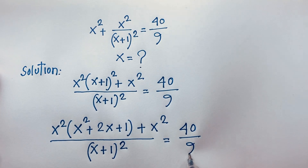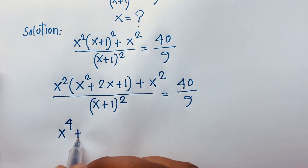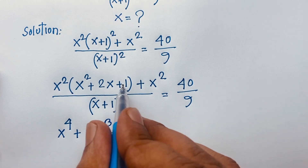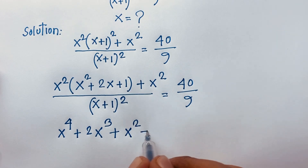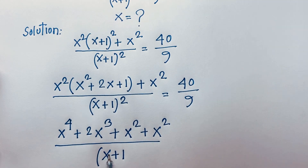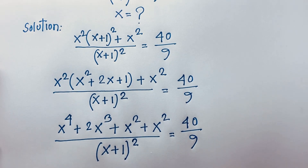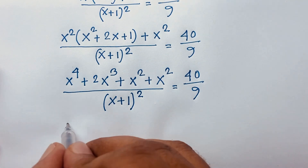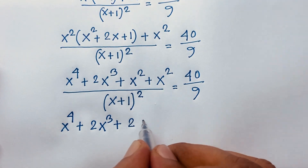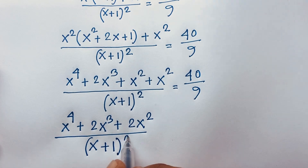Now, x² times x² will be x⁴, plus 2x times x² will be 2x³, plus 1 times x² will be x², then plus x², all over (x+1)² equals 40 over 9. Solving step by step, we get x⁴ + 2x³, and x² + x² will be 2x², all over (x+1)² equals 40 over 9.